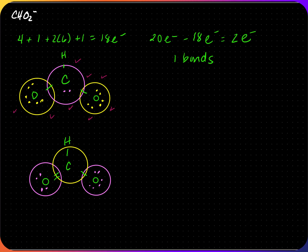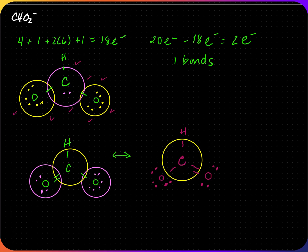Since the double bond was placed on one oxygen for CHO₂⁻, how do we know it doesn't go to the other oxygen? That means there is a resonance structure. The other structure is very similar — the double bond oxygen gets two lone pairs, and the single-bonded oxygen needs six more electrons. The central carbon is already fulfilled. Counting gives eighteen electrons. So this is another possible resonance structure for CHO₂⁻. The double bond will never go to the hydrogen because it would exceed the duet rule. The structures must be separated by a double-headed arrow, and since this is an ion, brackets with the charge go on the outside.